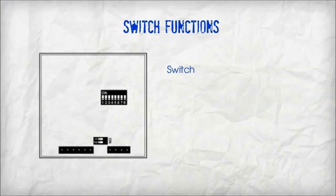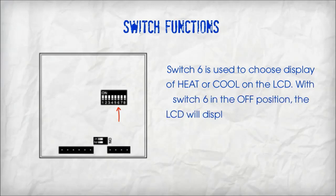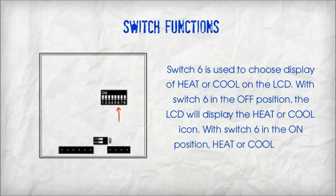Switch 6 is used to choose display of heat or cool on the LCD. With switch 6 in the off position, the LCD will display the heat or cool icon. With switch 6 in the on position, heat or cool will not display.